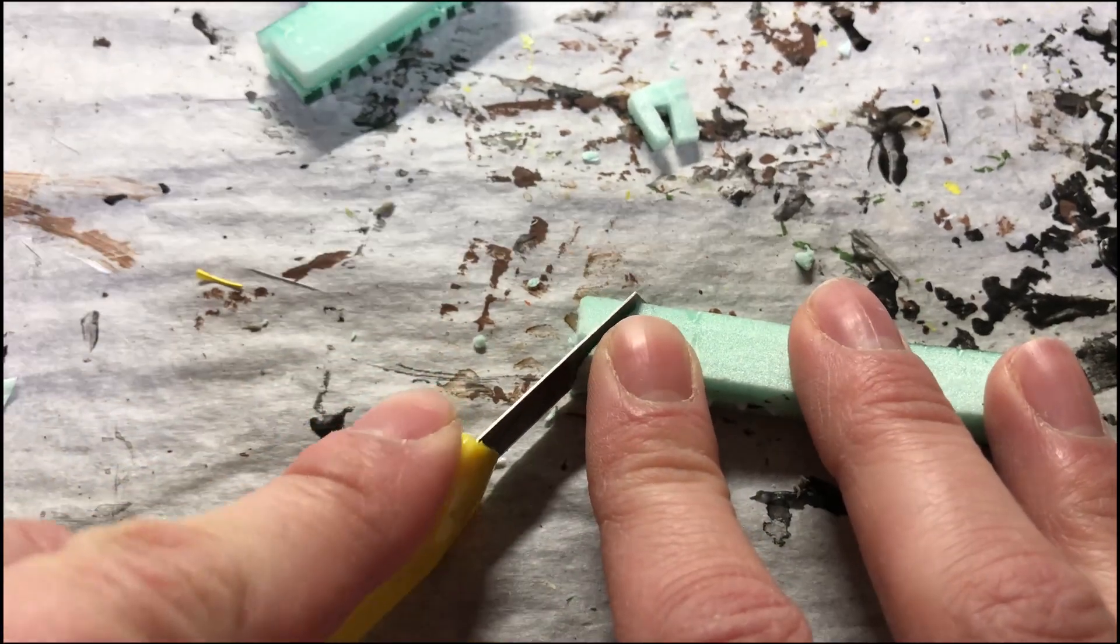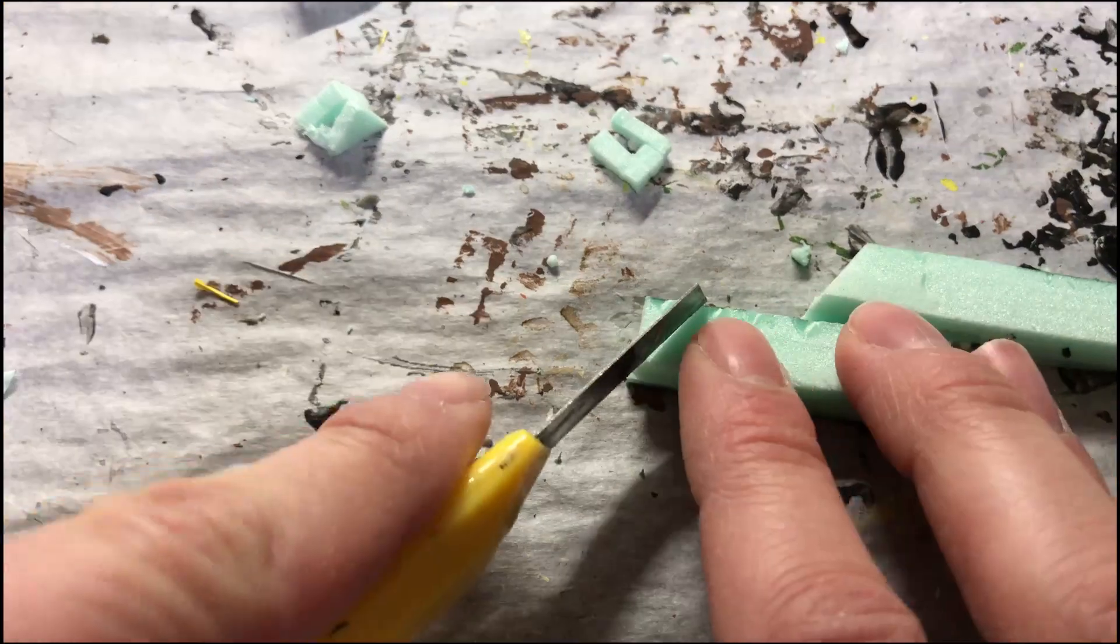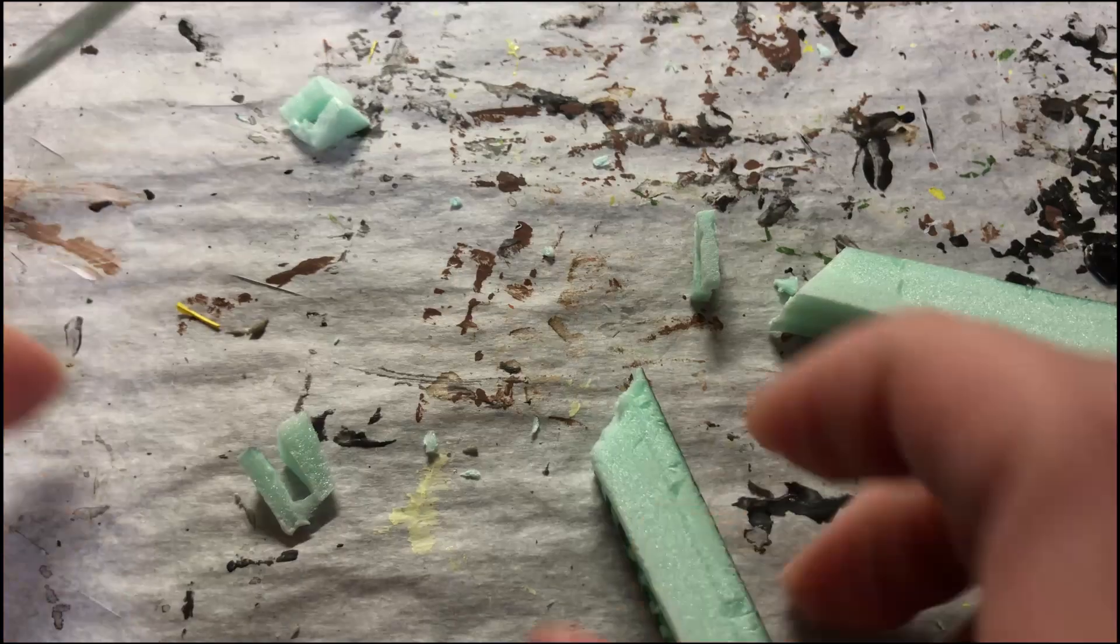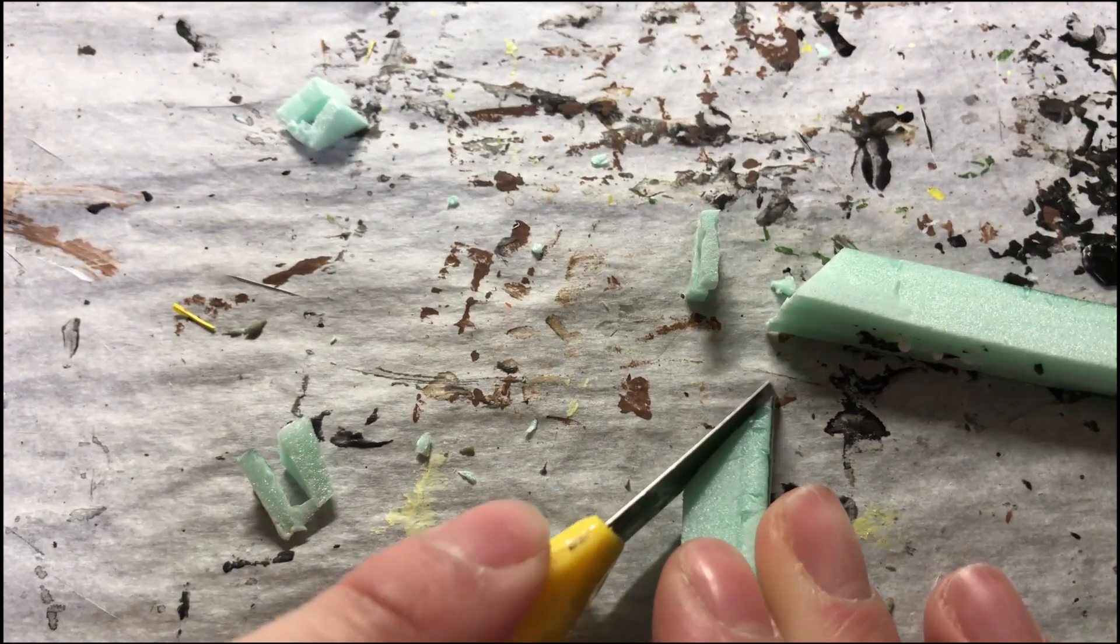Then when the glue is dry, I cut angles on the pieces so they fit together nicely and so there'd be a nice finished edge on the outside of the angle at the bend.